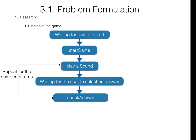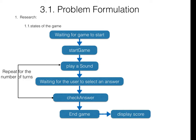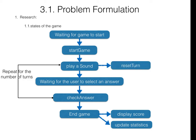When all turns are completed, the game moves to the end game. At the end game, the game gives the user the score and updates the statistics and history because a game has been completed. When the check answer determines correct or incorrect, it displays information to the user. When you go back to play the sound you have to reset the turn, and when you start the game you also need to reset the game and make some adjustments. This is the overall full picture of what it takes to run a game.